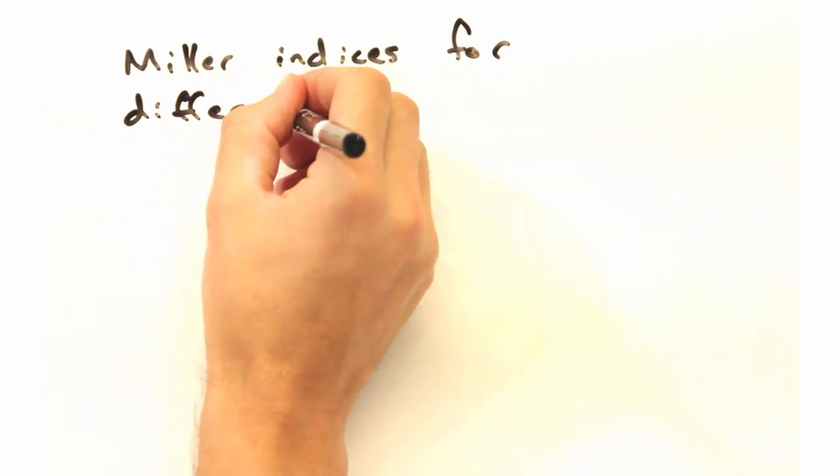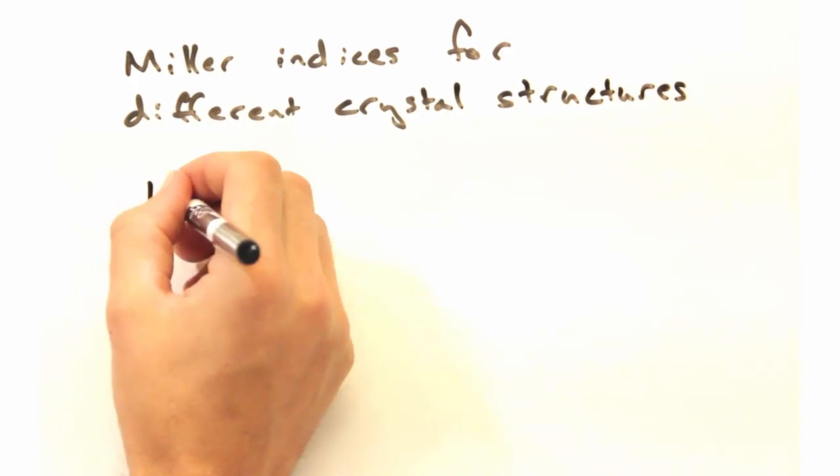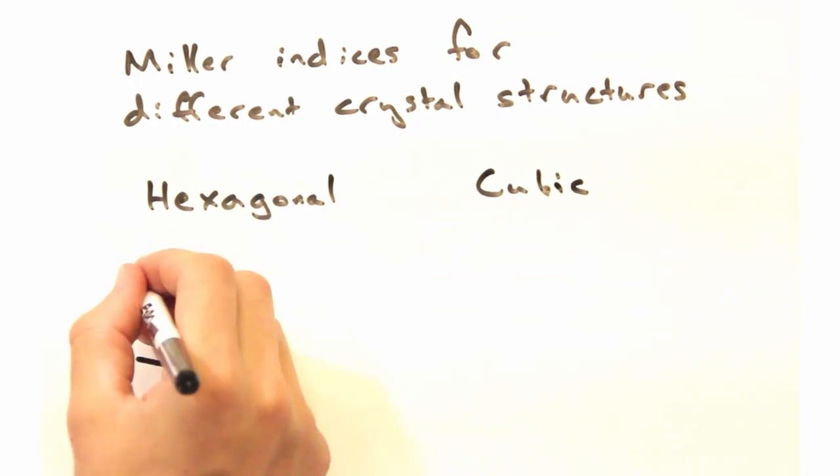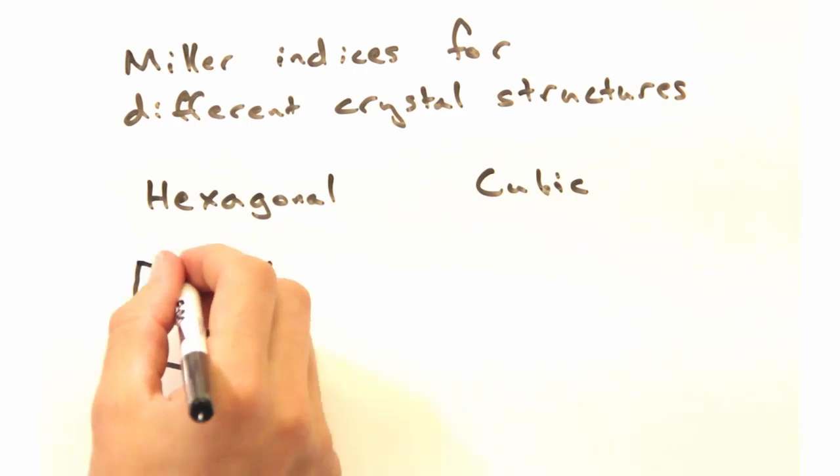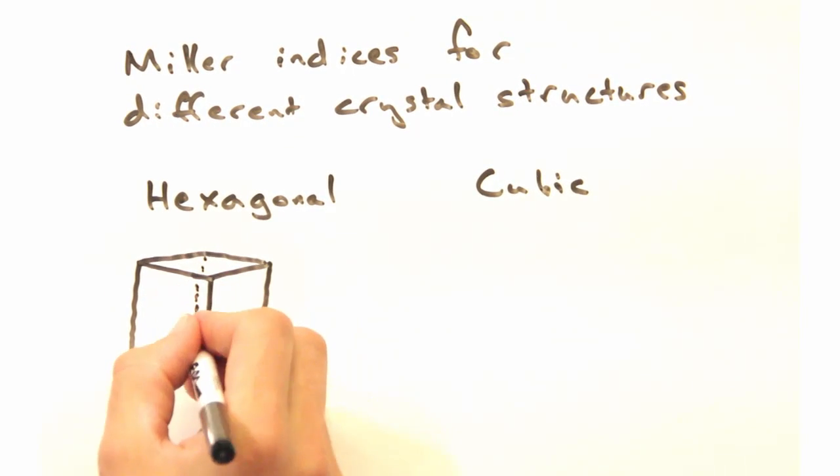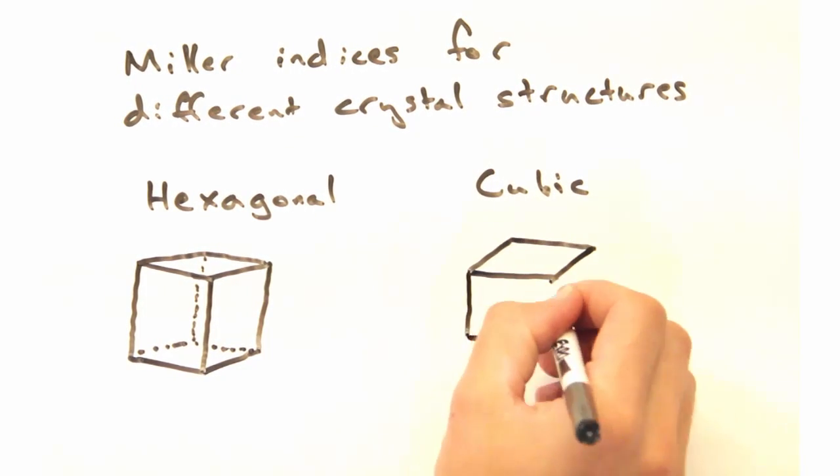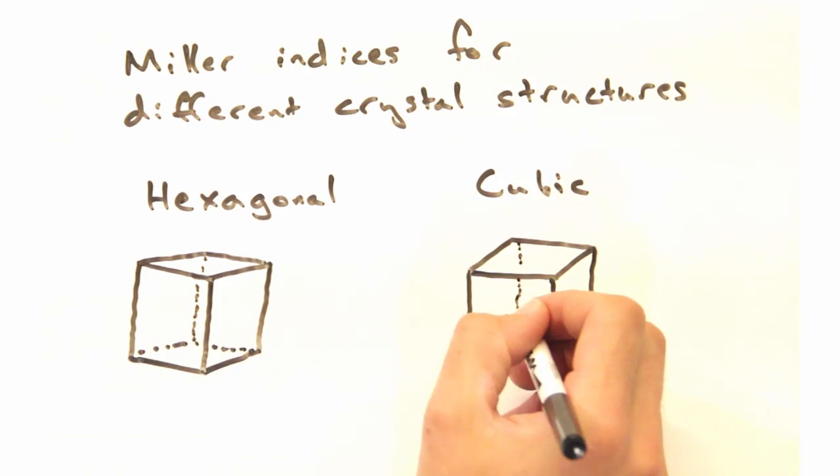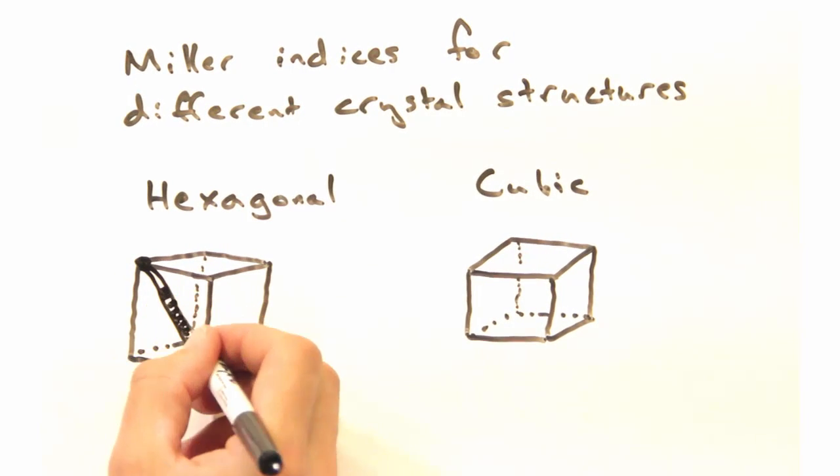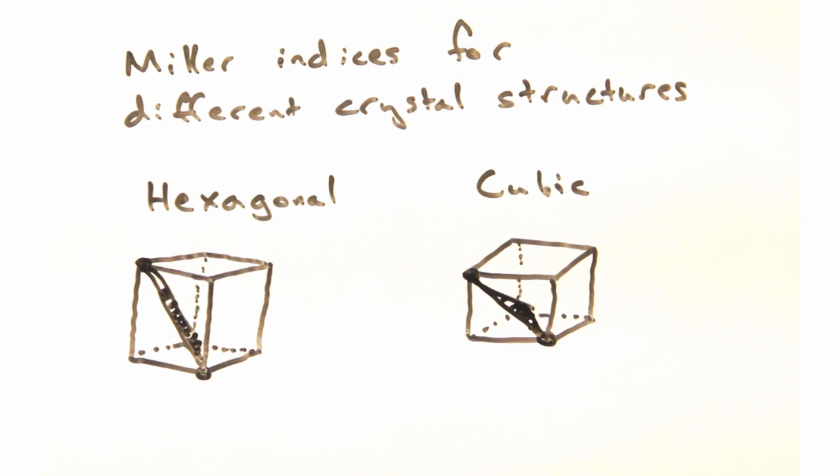We said earlier that planes in different crystal structures would look different. To illustrate this, let's look at a hexagonal lattice with lattice vectors a1, a2, and a3. Using intercepts at 1a1, 1a2, and 1a3, we can reconstruct the 1-1-1 plane, which looks considerably different from the cubic 1-1-1 plane.